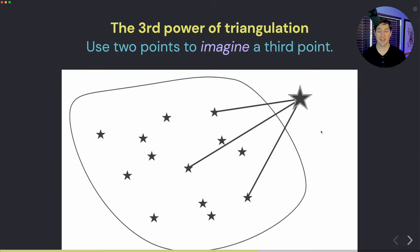And the third power of triangulation is perhaps the most exciting when you really think about what it's doing for us in this world of linking our thinking. We can take our existing body of growing thoughts, especially if we've externalized it into this note making space, and we can use it to actually imagine a third point, almost an intersection between the two.